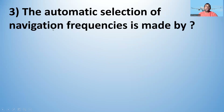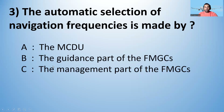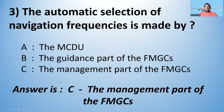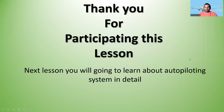Question 3: The automatic selection of navigation frequencies is made by — A) the MCDU; B) the guidance part of the FMGCs; C) the management part of the FMGCs. The answer is C — the management part of the FMGCs.